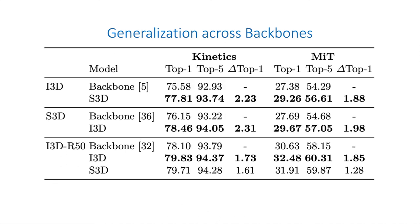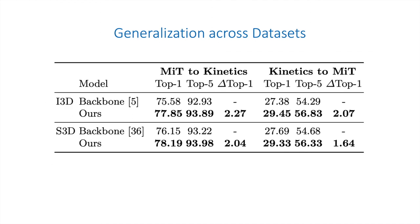We also look at the generalization across backbones. Besides I3D and S3D, we consider a third backbone called I3D-R50, which is an inflated 3D network based on ResNet-50. Again, our cells consistently improve the video classification accuracy when being applied on different backbones. Our cells also demonstrate strong generalization across datasets. For example, cells discovered on MIT perform well on Kinetics dataset.